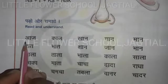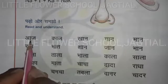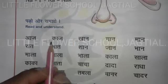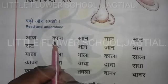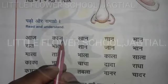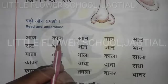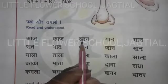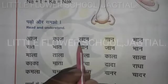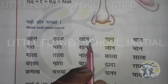Class work. Place aa matra. A plus ja equals aaj. Ka, place aa matra, ka plus ja equals kaan. Ka, place aa matra, place na equals kaan.